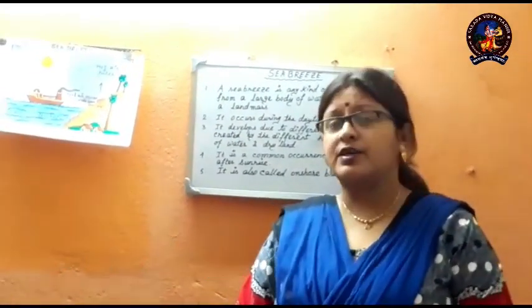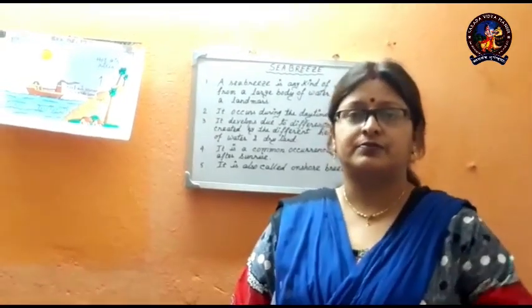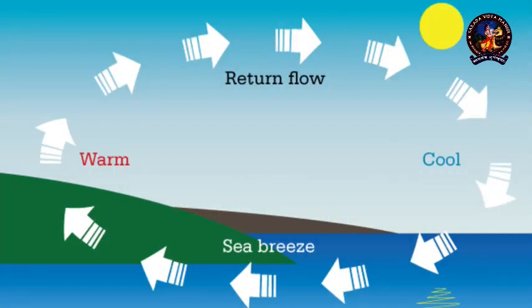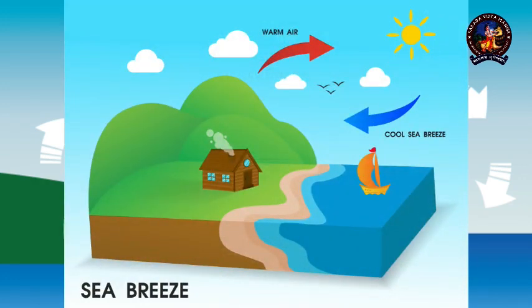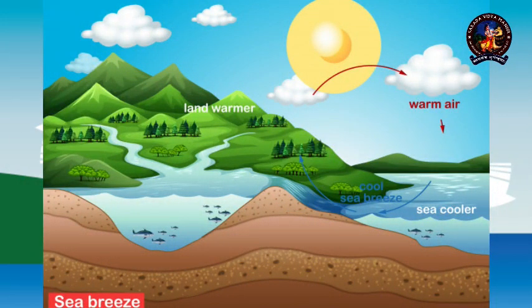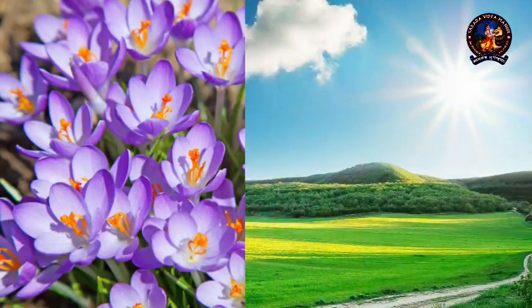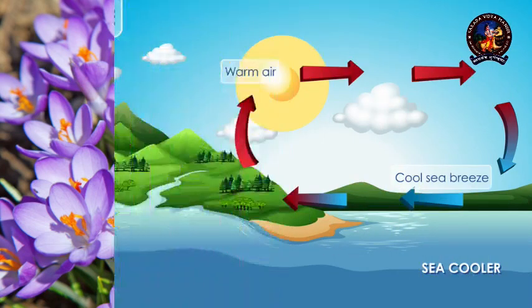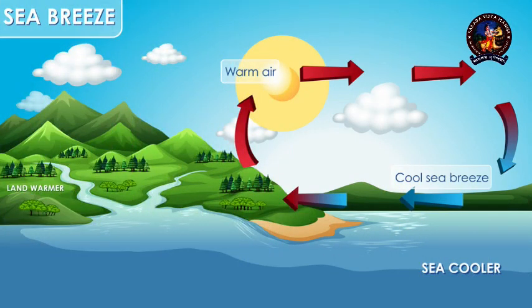So first, let us understand what is sea breeze. Sea breeze is a local wind system characterized by a flow from sea to land during the daytime. It occurs most often in the spring and summer season, and it develops due to the difference in temperature between the ocean and the land.